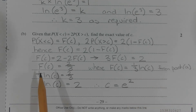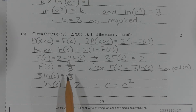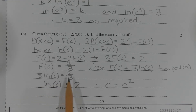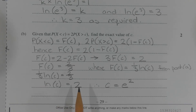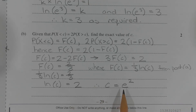So we have one over 3 times ln of C equals 2 over 3. Multiplying both sides by 3, we get ln of C equals 2. Raising both sides to base e, we get C equals e to the power of 2.